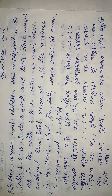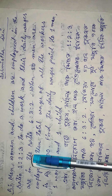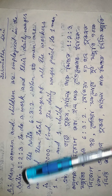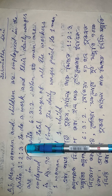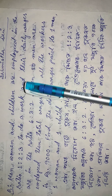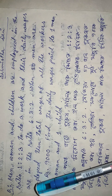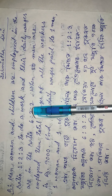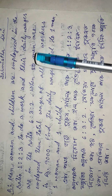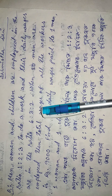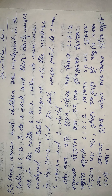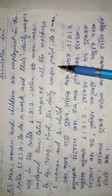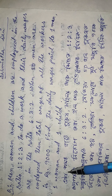Dear students, first of all write the question. Men, women and children are employed in the ratio 1:2:3 to do a work, and their daily wages are in the ratio 6:3:2. When 50 men are employed, the total wages of all the workers is Rs. 9,000. Find the daily wages paid to one man, one woman and one child.